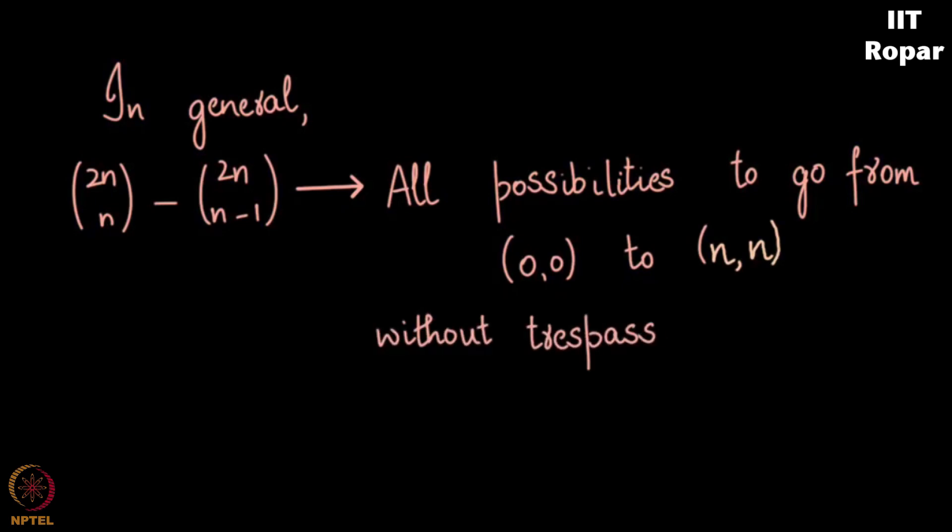I believe this lecture was quick. It was intended to be that way. I request you all to please pause here and there and watch the video multiple times so that you understand every piece of what is being told. There are actually several pieces here. There's a beautiful one-to-one correspondence idea that we use to count the total number of trespassing instances, and you use that to subtract from all possibilities, and hence finally you will get those possibilities where you do not trespass.